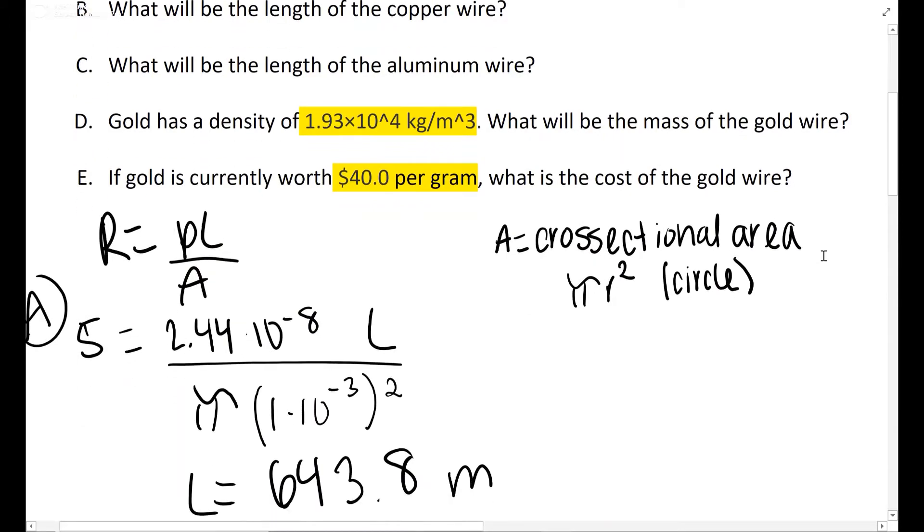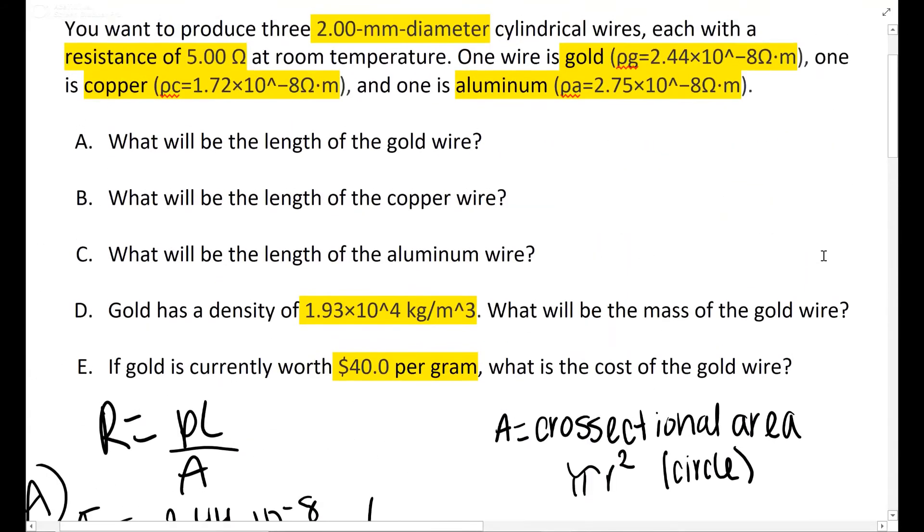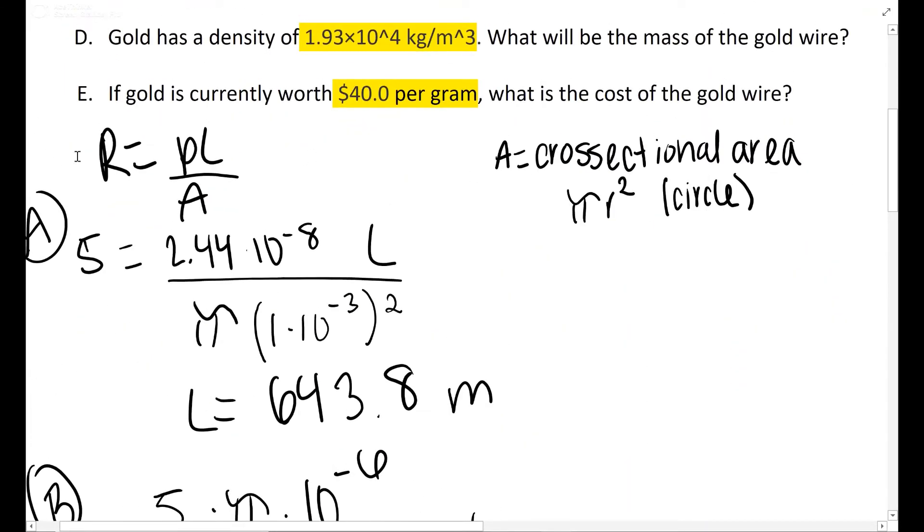I already have it worked out, so I'm just going to describe it. So for A, B, and C, we're finding length. We're doing the exact same thing for all of them using this equation: the resistance equals the resistivity times the length over the area, R = ρL/A. The area in this case is the cross-sectional area of a wire, so that is going to be a circle, π r². They give you that the diameter is two millimeters, so the radius is one millimeter or 10⁻³ meters, which is what you're going to see right here.